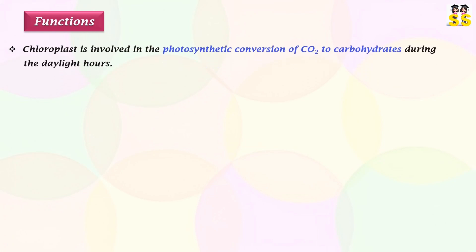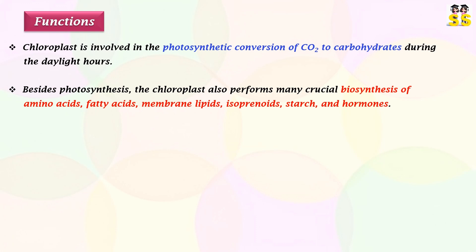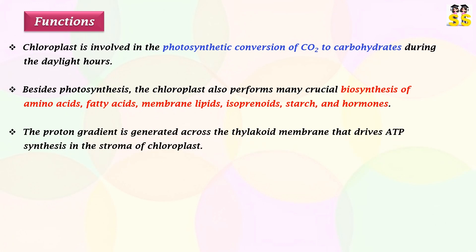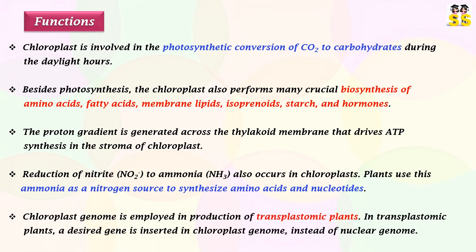The functions of chloroplast are as follows: most importantly, chloroplasts perform photosynthesis during the daylight hours. Chloroplasts also provide diverse metabolic activities, including the biosynthesis of amino acids, fatty acids, and membrane lipids. The proton gradient across the thylakoid membrane drives the synthesis of ATP in the stroma of the chloroplast. Nitrite is reduced to ammonia in the chloroplast, which is an essential step to synthesize amino acids and nucleotides in plants. The chloroplast genome is also employed in the production of transplastomic plants.